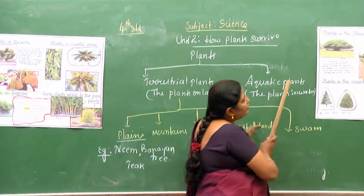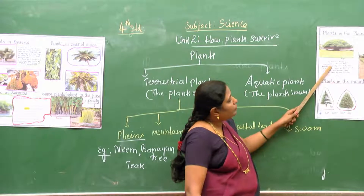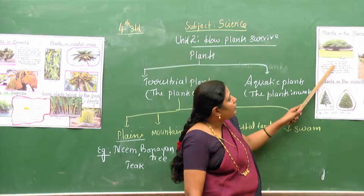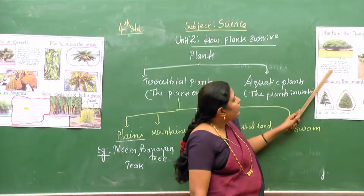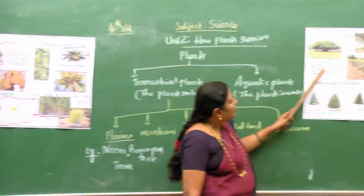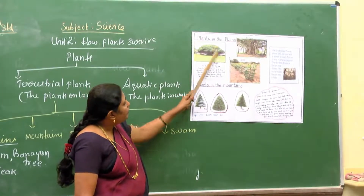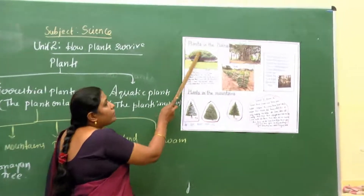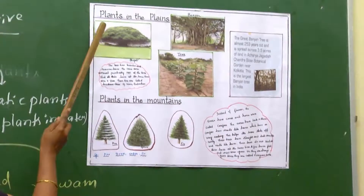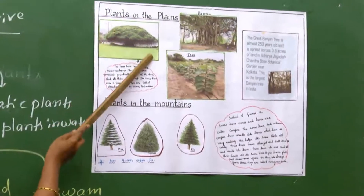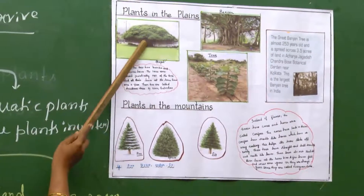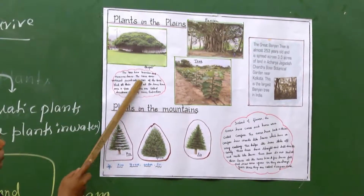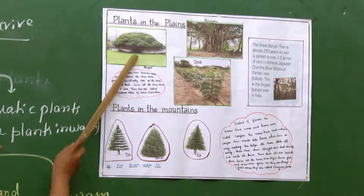The trees have branches and numerous leaves. The leaves are renewed periodically. As many leaves are present, they shed their leaves and there is immediately a replacement with new leaves. So the leaves are renewed periodically.